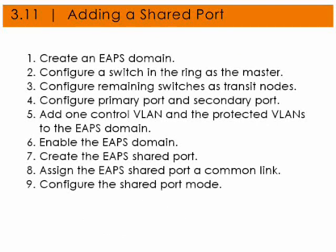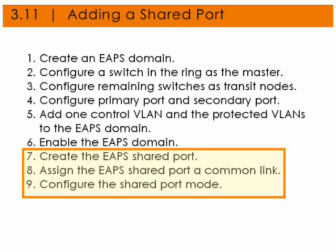Adding a shared port to an existing EAPS configuration is easy. We've already completed steps 1 through 6. These are the steps that you would take: create an EAPS domain; configure a switch in the ring as the master; configure all the remaining switches as transit nodes; configure the primary and secondary ports; add one control VLAN and all the protected VLANs to the EAPS domain; enable the EAPS domain. Then steps 7 through 9: create the EAPS shared port; assign the EAPS shared port to a common link; configure the shared port mode.